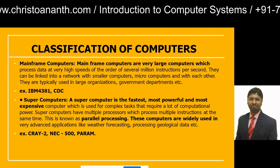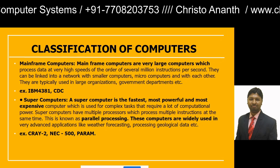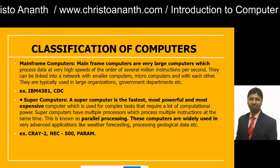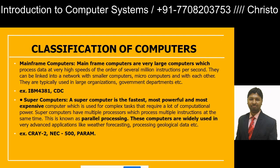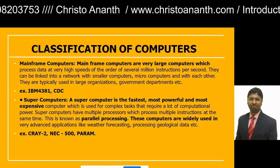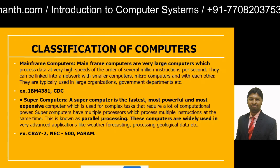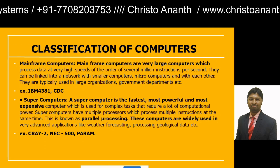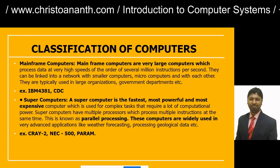An enhanced version of a mainframe computer is a supercomputer. A supercomputer is very fast, more powerful, less bulky, and most expensive. It is used to process complex tasks. A supercomputer has multiple processors, allowing parallel processing of multiple instructions simultaneously. Parallel processing is the main advantage of supercomputers. They are widely used in advanced applications such as weather forecasting and processing geological data. Examples include Cray-2, NEC SX-5, and PARAM computers.